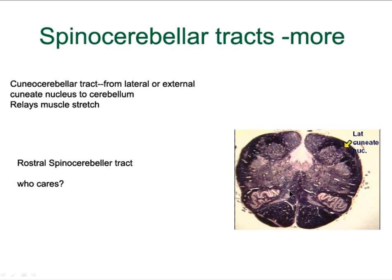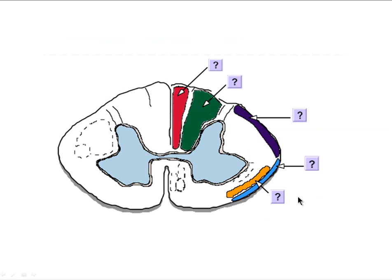Here's a nice slice through the lower medulla. We have nucleus gracilis, nucleus cuneatus, the lateral cuneate nucleus lateral to nucleus cuneatus. Also identifiable are the spinal tract and nucleus of five, the olive, the medial lemniscus, the hypoglossal nucleus, nucleus ambiguus, and the corticospinal tract in the pyramids. By now you should be able to label these tracts — the spinocerebellar tracts collectively, the dorsal and ventral ones individually.